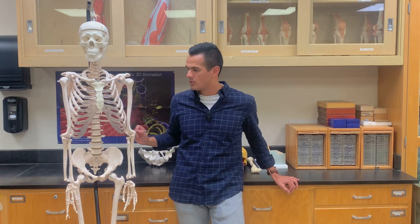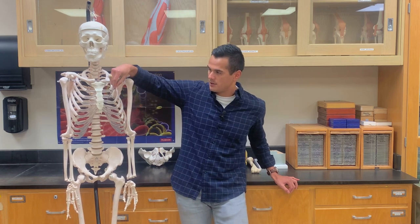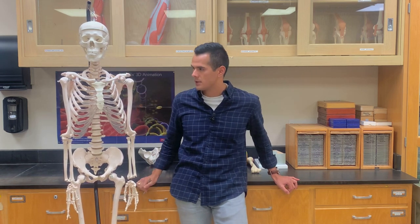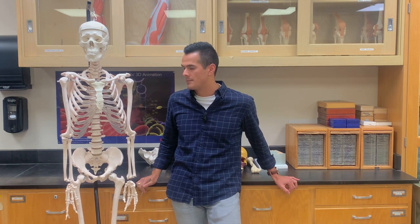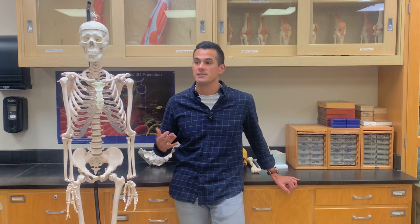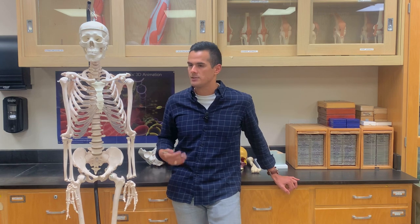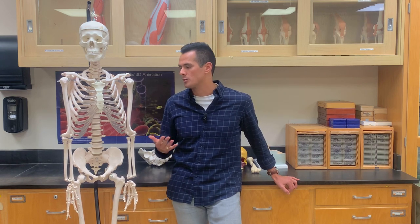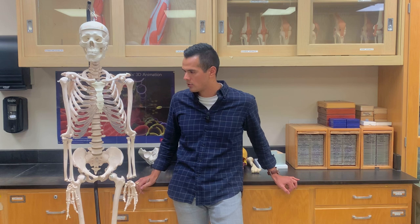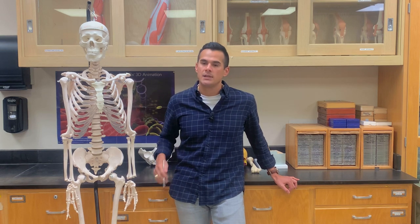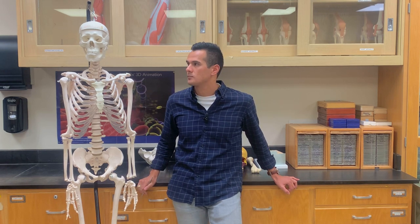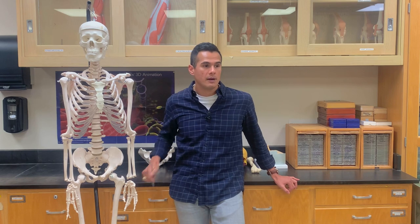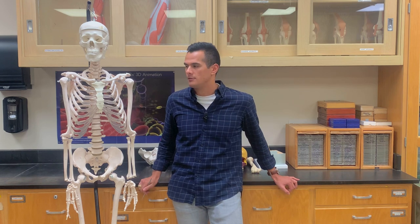That's fibrocartilage. We also have hyaline cartilage, which is found at the costal cartilage of the ribs, and that is to resist compressive forces — compared to shock absorption, which is the role of fibrocartilage. And then for the ear — elastic cartilage is found within the ear.